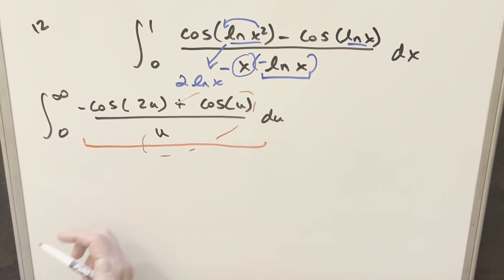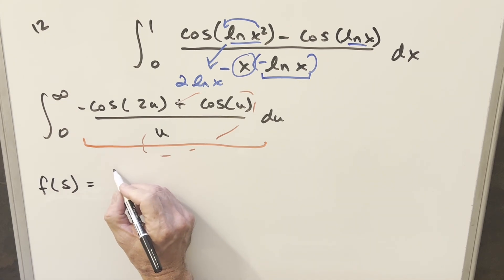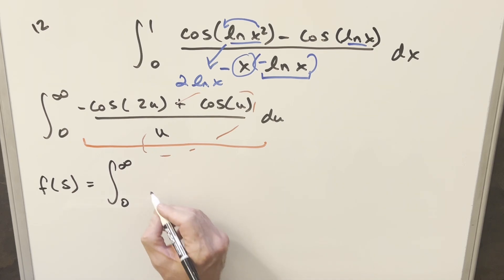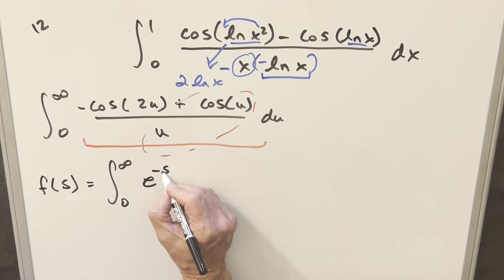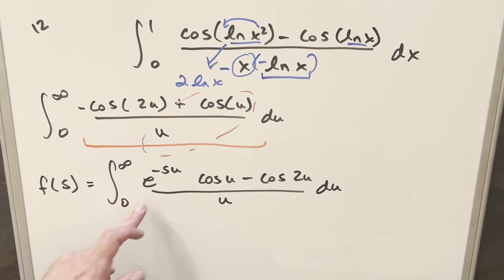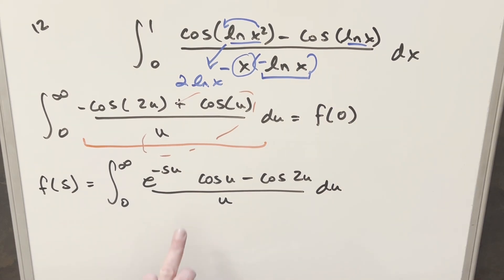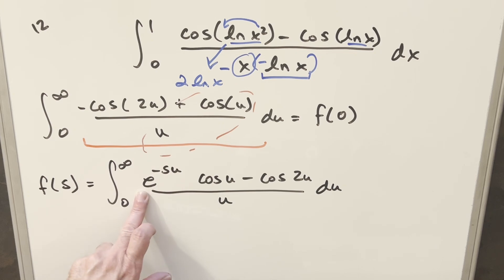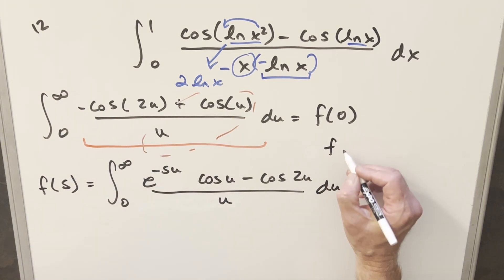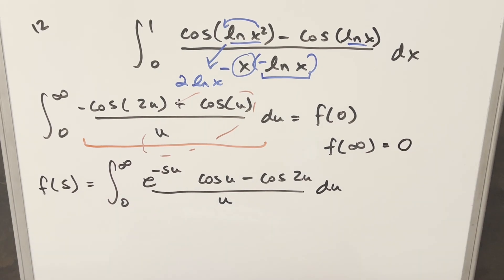This is actually similar to the sine of x over x integral from 0 to infinity. For Feynman's trick, we'll create a function f(s) — the same integral but with an added parameter e to the minus su. When s is 0, e to the 0 is 1, so f(0) is our original integral. And as s goes to infinity, e to the minus su forces the whole integral to 0 — so we can use that boundary condition later.